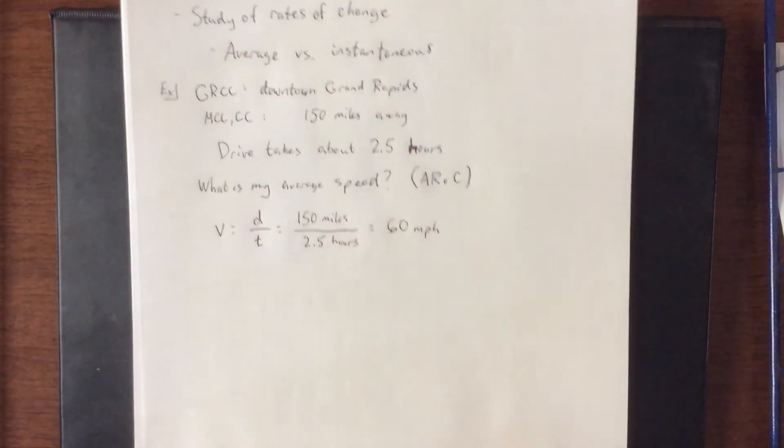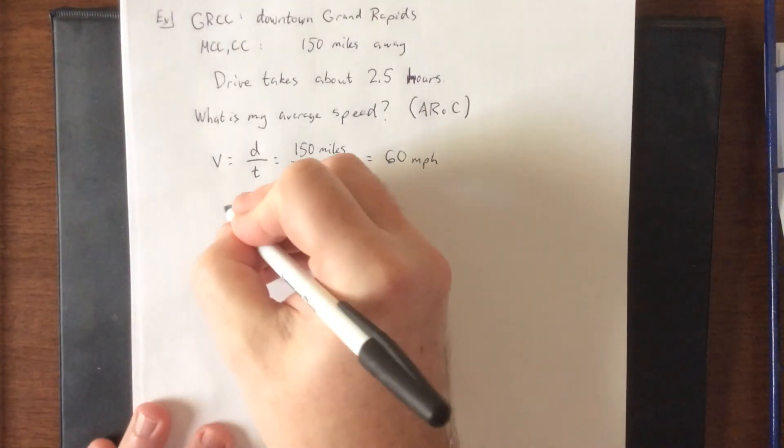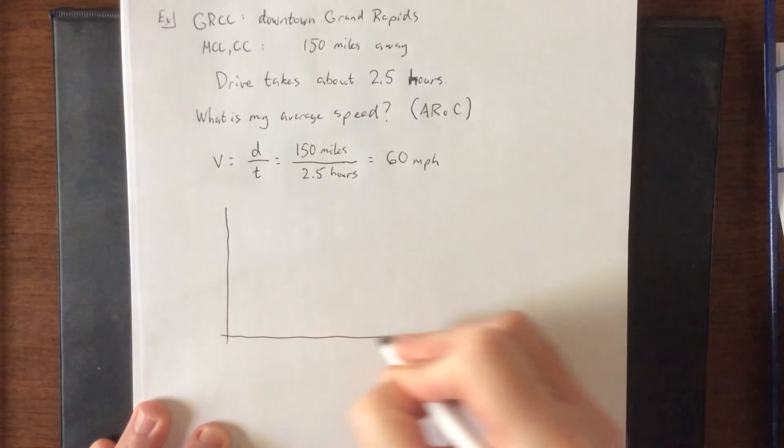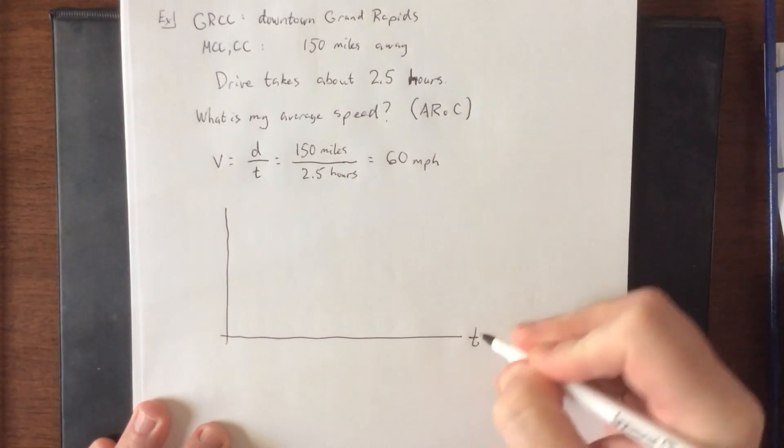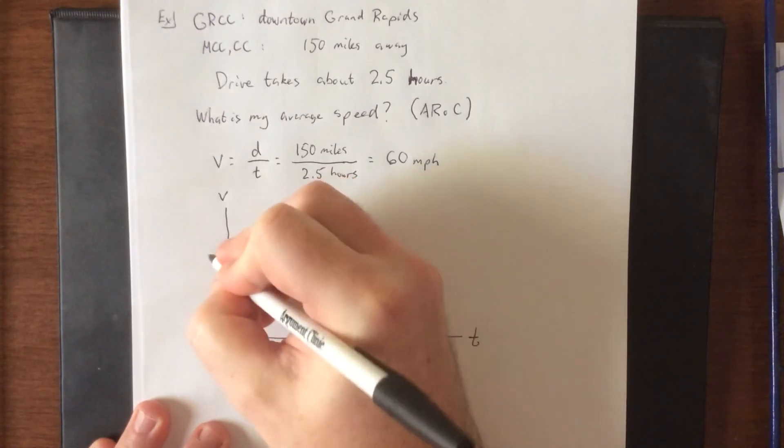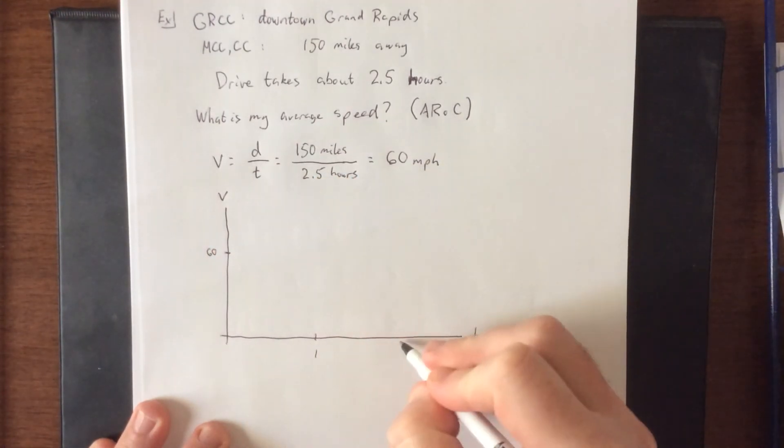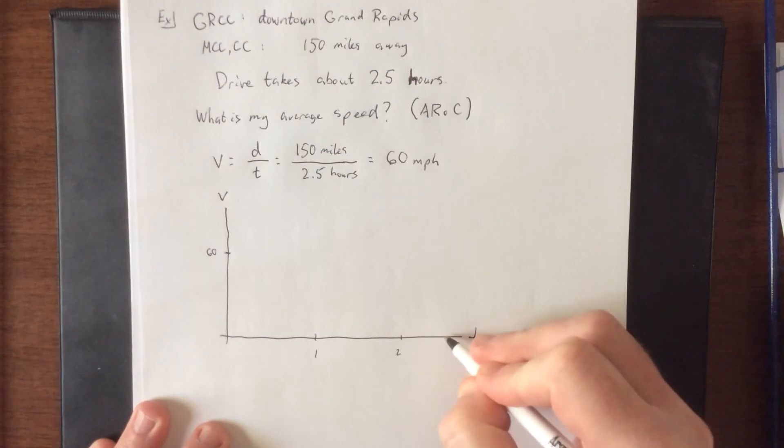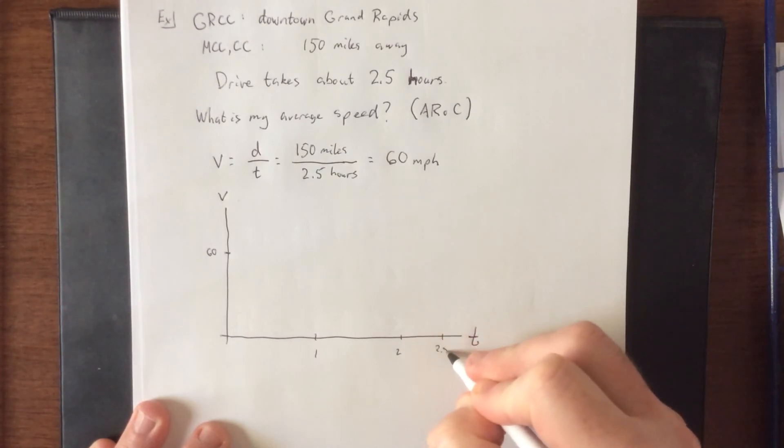So if we were to, in a more mathematical sense, consider what that graph would look like over the course of two and a half hours. Here's my time. Here's my velocity. Here's 60 miles an hour. Here's one hour. Here's two hours. Here's 2.5 hours.